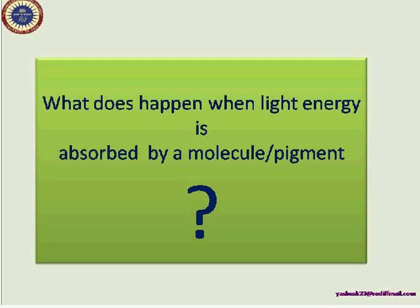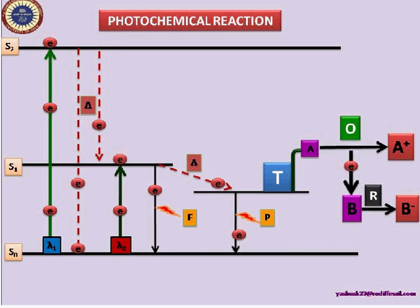The next question is: what happens when light energy is absorbed by a pigment or molecule? These are showing three energy levels: S0, S1, and S2. Blue light has a shorter wavelength so its energy is higher; when an electron absorbs blue light it goes to the higher S2 state, and when it comes back it releases energy as heat, or it may stay at the S1 level. When an electron absorbs red-wavelength energy, it goes to the S1 state, and when it comes back it can release energy as light — that is fluorescence.